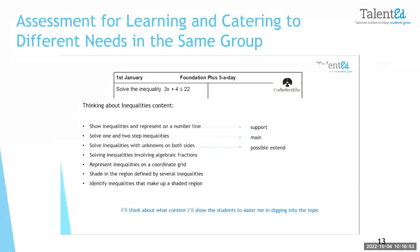What I generally do is look at the curriculum content for inequalities. I'm looking at the top three bullet points in curriculum order. The first — showing inequalities and representing on a number line — I call 'support'; I just want to check the knowledge before. Then there's solving one- and two-step inequalities, which I call 'main'. And if all goes well, I may introduce solving inequalities with unknowns on both sides — that's taking the algebra a little bit further.